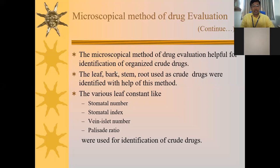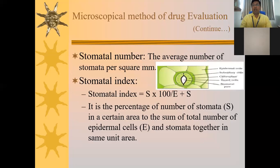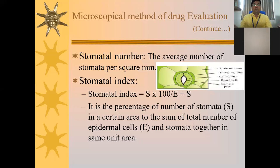Students may be asked in examination about stomatal number and its importance. The average number of stomata per square mm is called the stomatal number. A stomata is formed from two guard cells, and whatever pore is formed because of the guard cells is called the stomatal pore or stoma. The subsidiary cells are present alongside the guard cells, and epidermal cells form a compact structure around them.